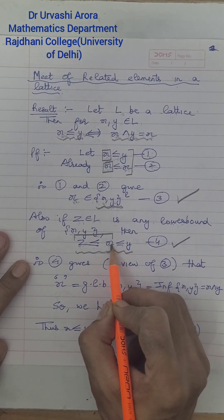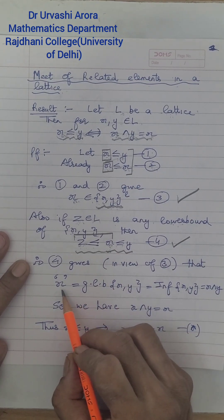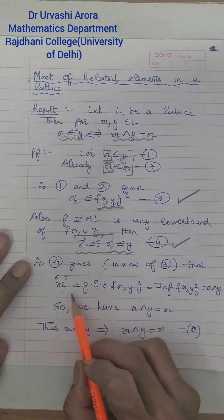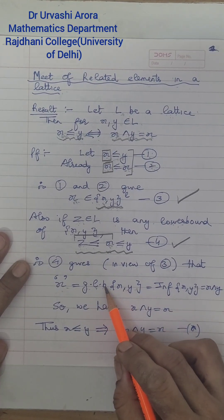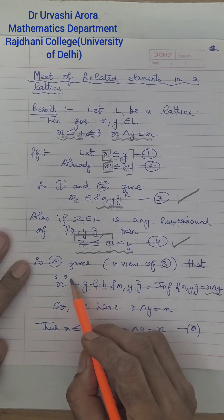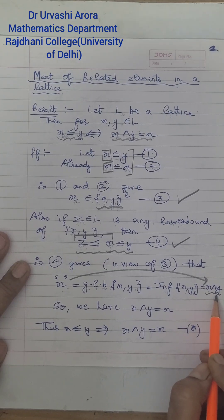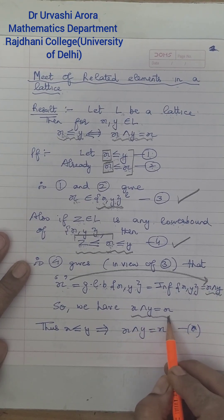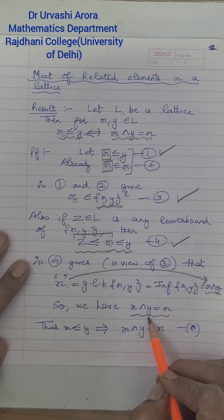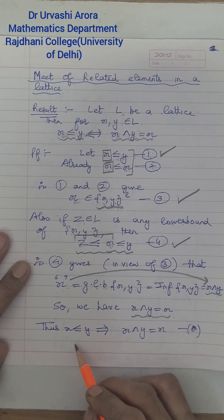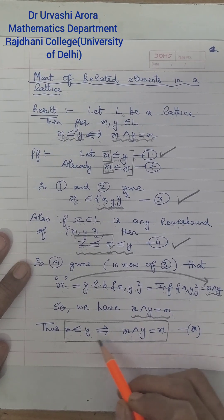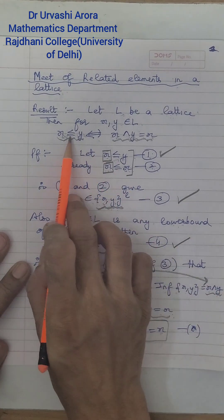So X is a lower bound of X and Y, and it is greater than or equal to any other lower bound of X and Y. This means X is the greatest lower bound of X and Y, written GLB. The greatest lower bound is the infimum, and the infimum of X and Y is represented by X meet Y. So X meet Y equals X. We started with statement 1, that X ≤ Y, and reached the conclusion that X meet Y = X. This is marked as star.